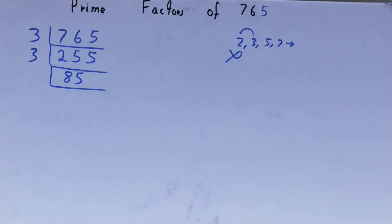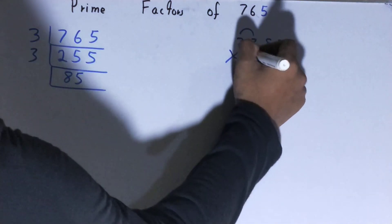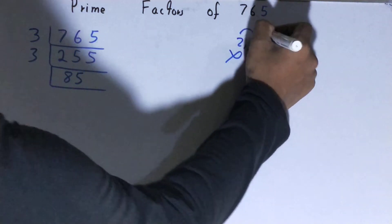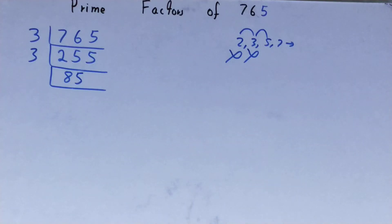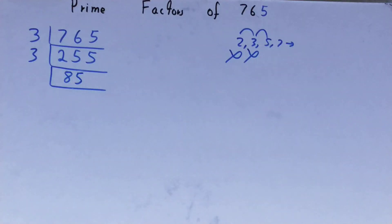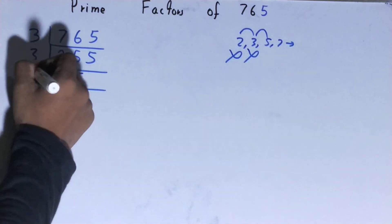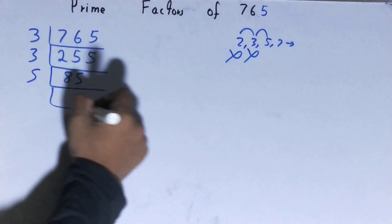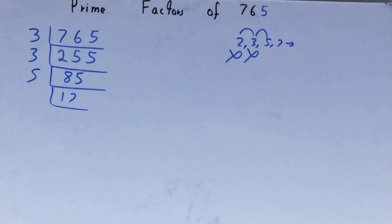Now is 85 divisible by 3? If you check, it is not. So we'll go to the next lowest prime number, which is 5. Is 85 divisible by 5? The last digit is 5, so yes it is. Divide it and you will be left with 17.